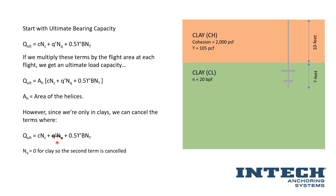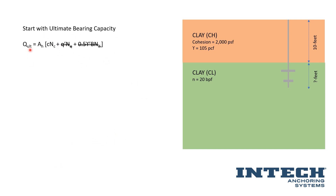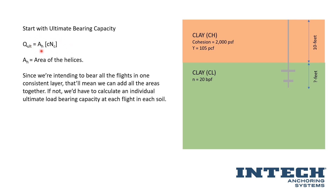Since we're only in clays, we can cancel out some terms. The overburden term — N sub Q — goes to zero for a phi angle of zero for clay. And since the footing width B within that term is very small — 10 inches and 12 inches — we can also cancel that third term. So we can reduce the equation to the area of helices times just the cohesion term for bearing capacity. Since we intend to bear all flights in one consistent layer, we can add the areas together and use the same bearing capacity. In a sand or frictional material, we might have to account for the increase in overburden stress with depth.